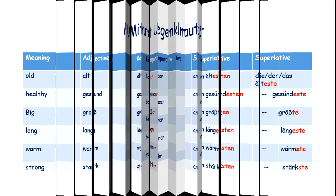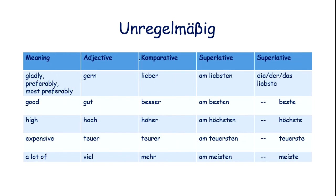After that, there is the Unregelmäßig (irregular) form. Gern, lieber, am liebsten — das liebste. Gut, besser, am besten. Viel, mehr, am meisten. These do not follow any pattern — you need to remember them.